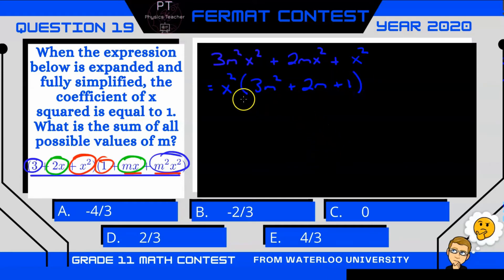And what this is saying is this coefficient here is going to be equal to 1. So 3m squared plus 2m plus 1 will equal 1.